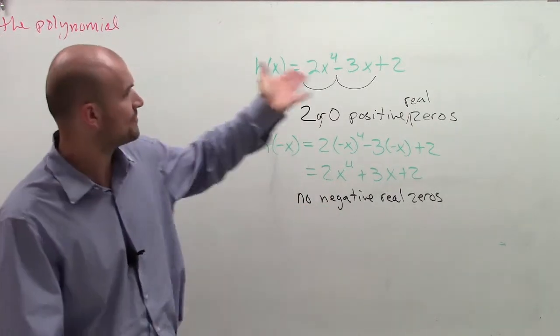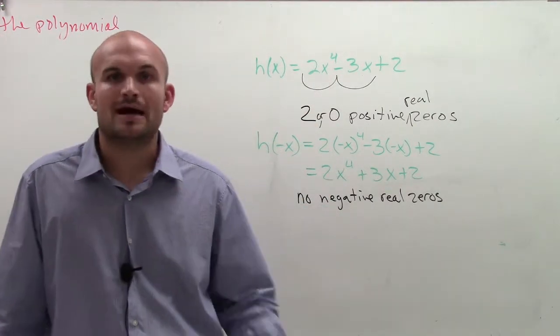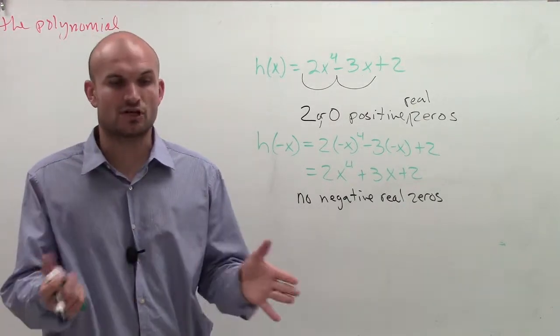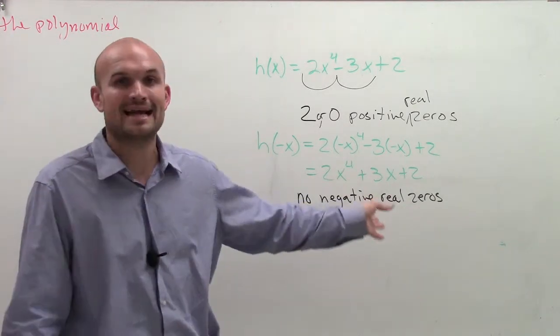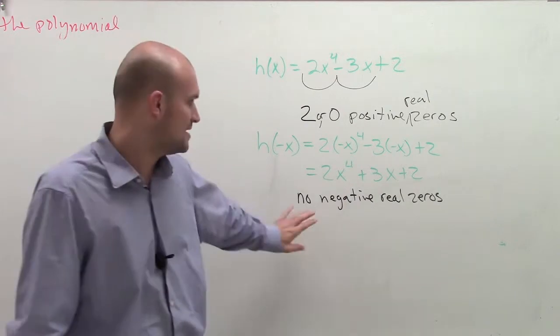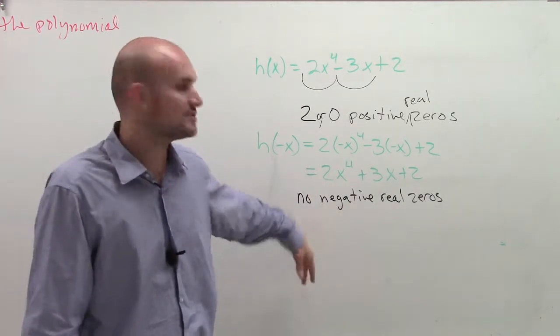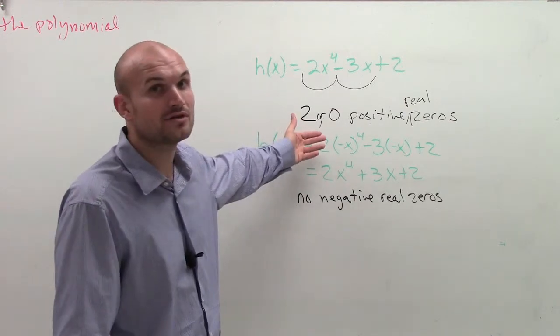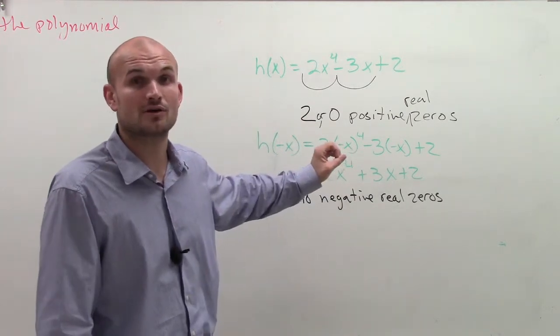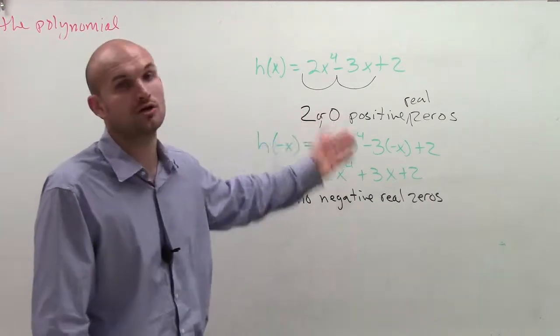So if I was going to use maybe p over q, I wouldn't really have to look, or if I was going to graph, I wouldn't even have to look for any negative values because by using Descartes rule of signs I'm able to determine that there are no negative zeros. I either have two positive real zeros or no real zeros and they're all going to be imaginary.